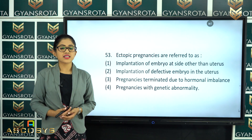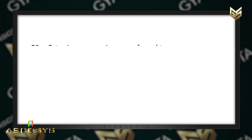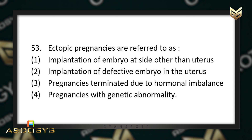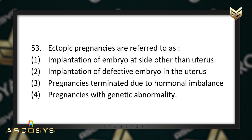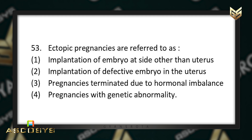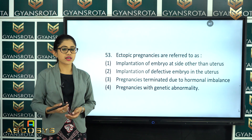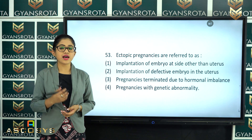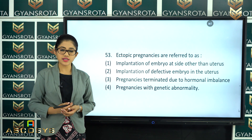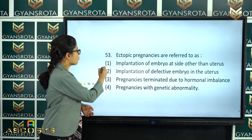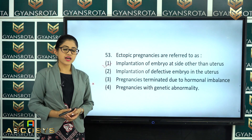The next question is question number 53. Ectopic pregnancies are referred to as: implantation of embryo at a site other than the uterus; implantation of a defective embryo in the uterus; pregnancy terminated due to hormonal imbalance; or pregnancy with genetic abnormality? From the chapter Reproductive Health, if implantation of the embryo takes place at a site other than the uterus, it is called ectopic pregnancy. Option number 1 is the correct answer.